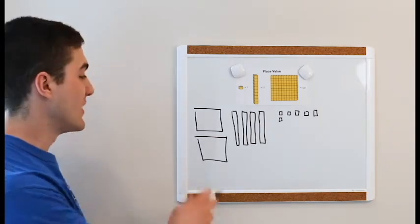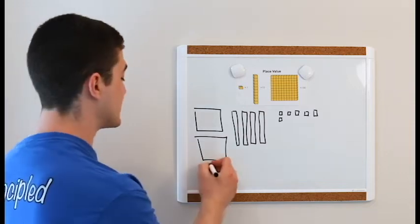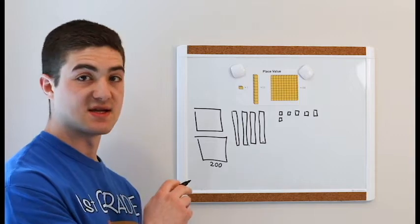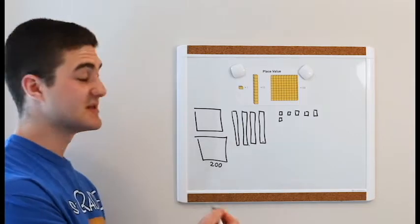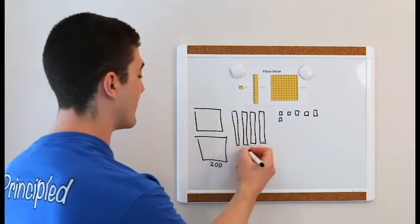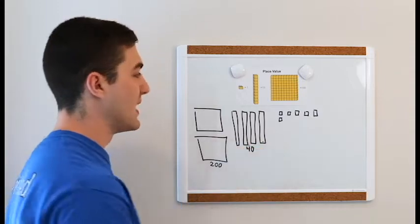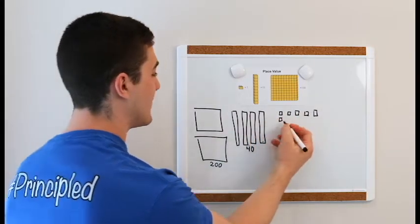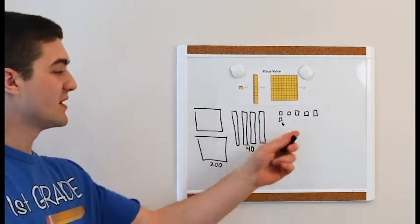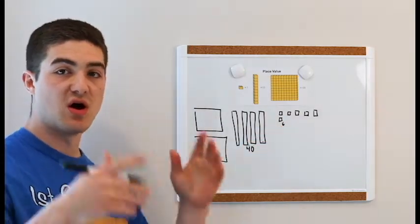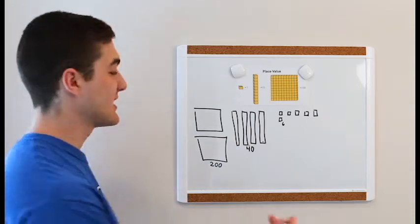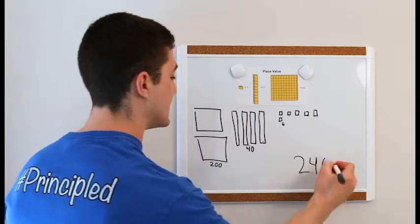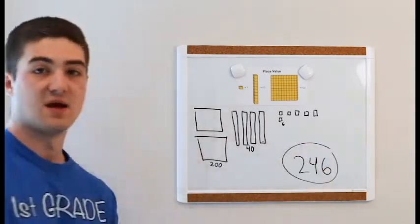We counted up: we have two 100 blocks, which makes 200. We have one, two, three, four 10 sticks — counting by tens: 10, 20, 30, 40. And then we count our ones: one, two, three, four, five, six — we have six ones. So we have 200, 40, and six. When we put it all together, we have 246. And that is our answer.